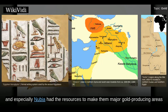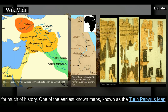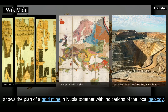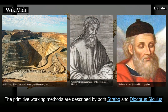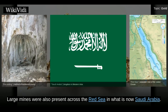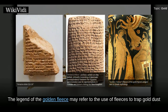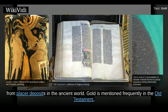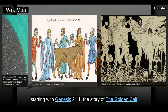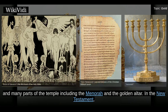Egypt, and especially Nubia, had the resources to make them major gold-producing areas for much of history. One of the earliest known maps, known as the Turin Papyrus map, shows the plan of a gold mine in Nubia together with indications of the local geology. The primitive working methods are described by both Strabo and Diodorus Siculus and included fire setting. Large mines were also present across the Red Sea in what is now Saudi Arabia. Gold is mentioned in the Amarna letters numbered 19 and 26 from around the 14th century BC. The legend of the golden fleece may refer to the use of fleeces to trap gold dust from placer deposits in the ancient world. Gold is mentioned frequently in the Old Testament, starting with Genesis chapter 2 verse 11, the story of the golden calf, and many parts of the temple including the menorah and the golden altar.